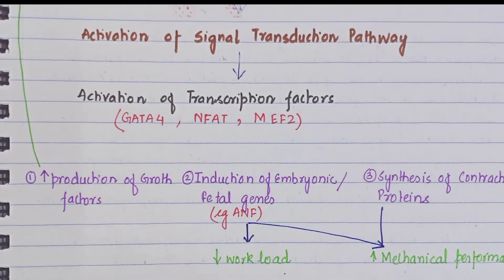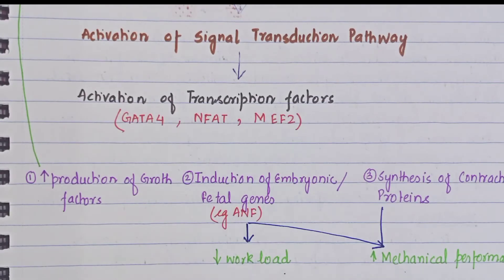To summarize the molecular pathway: growth factor release, mechanical stretch, and hypertrophic agonist release activate the signal transduction pathway, which activates transcription factors, leading to production of growth factors, induction of fetal genes, and synthesis of contractile proteins. The result is that workload is managed and cardiac performance increases.